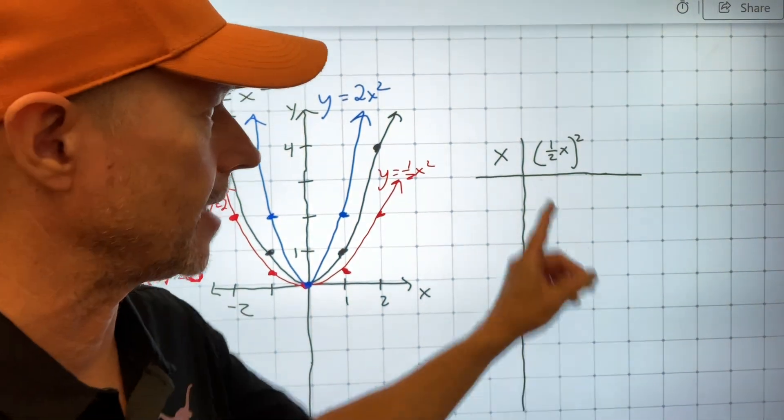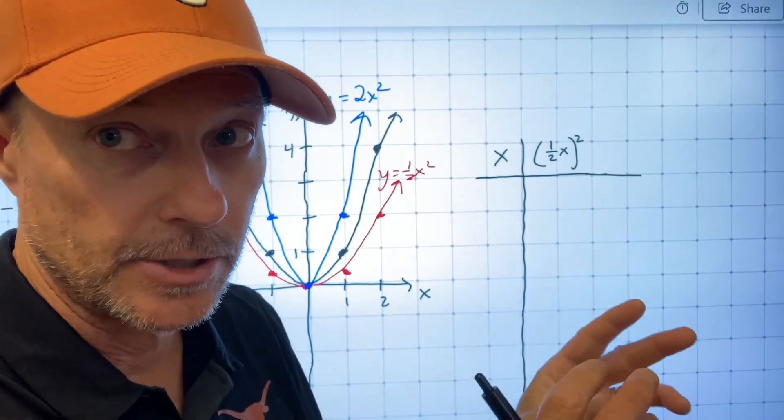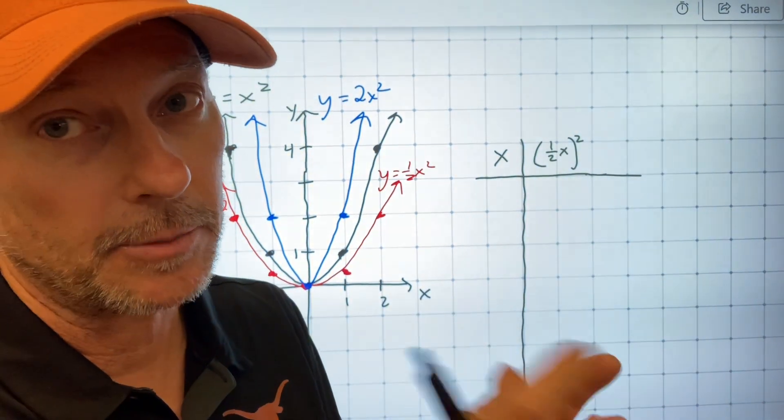So what if I put a 1 half inside and multiply by the x before squaring? So I change the order of operations. Instead of having the half on the outside where I have to square first, I have the half on the inside, the parentheses. So I have to go in the parentheses and multiply first.